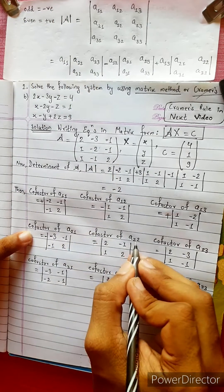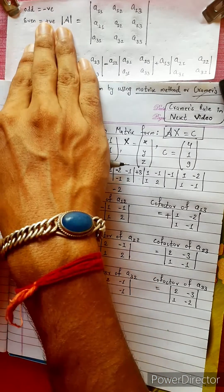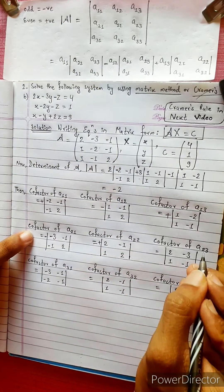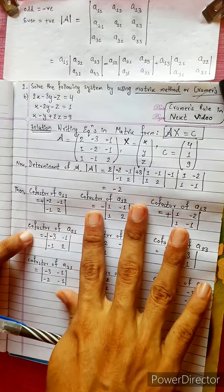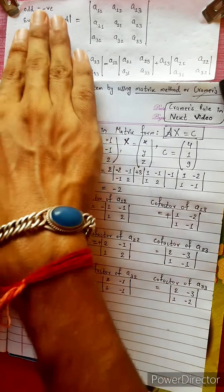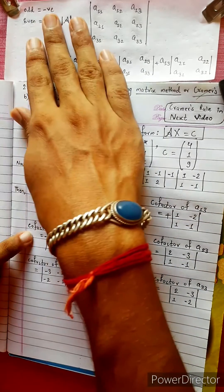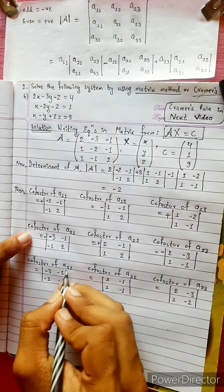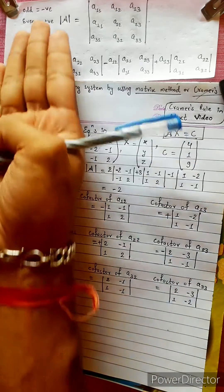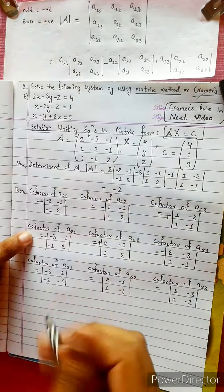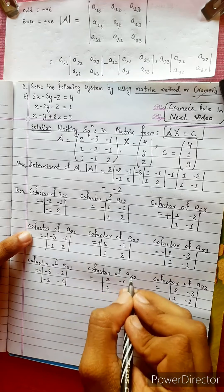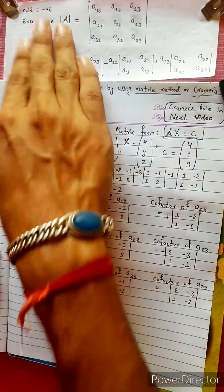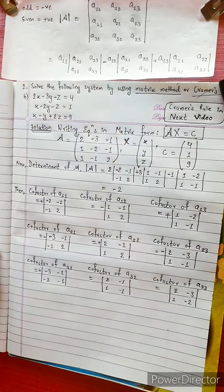A22: 2 plus 2 equals 4. 4 is even, so it is positive. A23: 2 plus 3 equals 5. 5 is odd, so it is negative. A31: 3 plus 1 equals 4. 4 is even, so it is positive. A32: 3 plus 2 equals 5. 5 is odd, so it is negative.